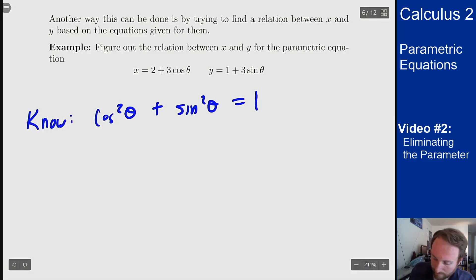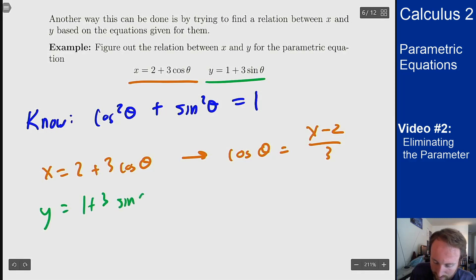So the x equation here, x equals 2 plus 3 cosine theta, tells me that I can write cosine theta as x minus 2 over 3. Similarly the y equation, 1 plus 3 sine theta, tells me that I can write sine theta as y minus 1 over 3.